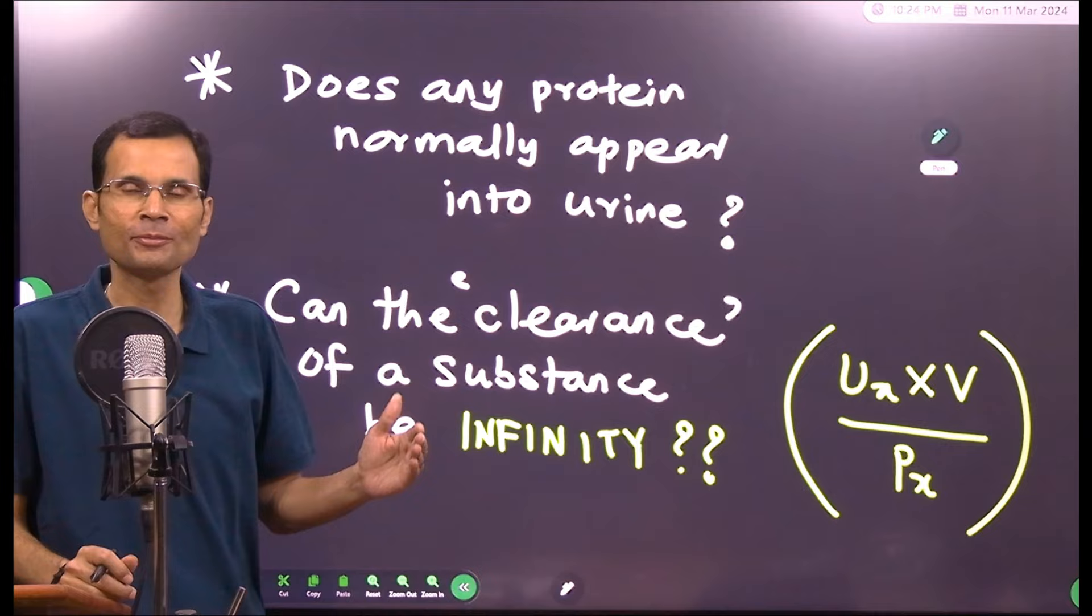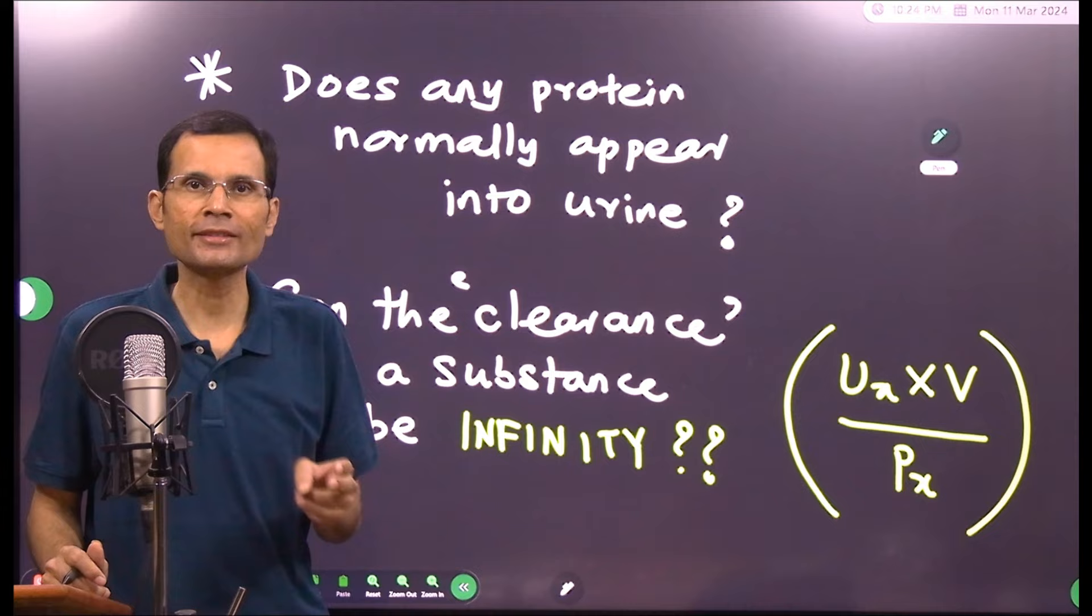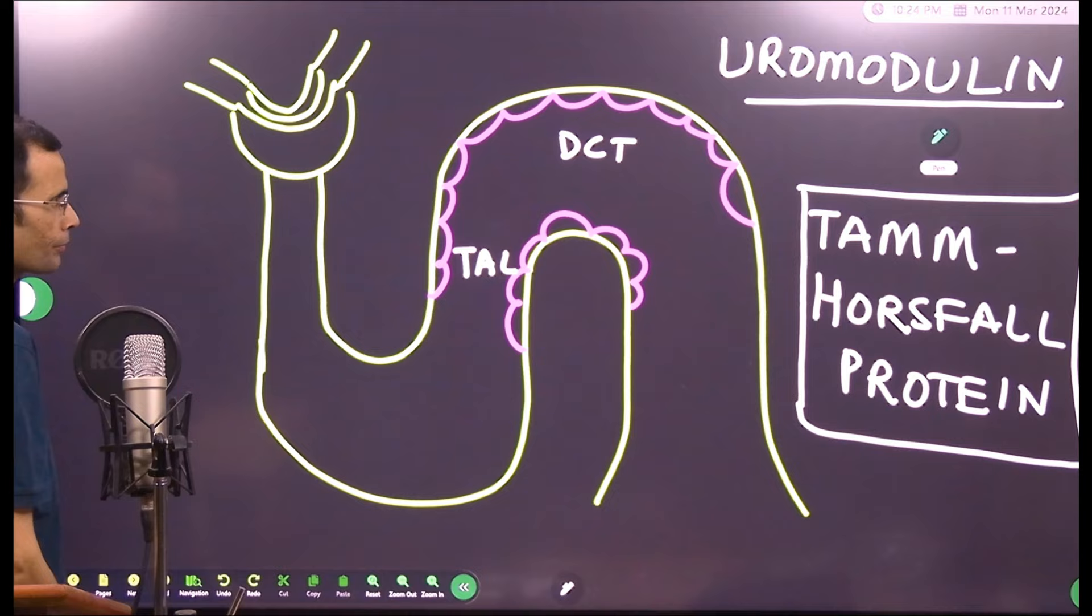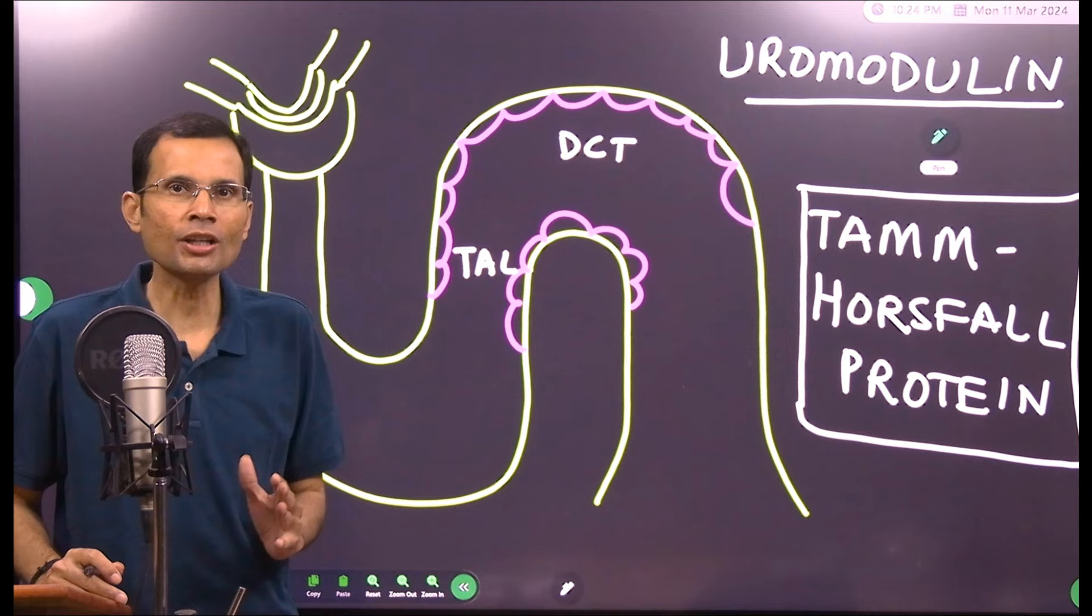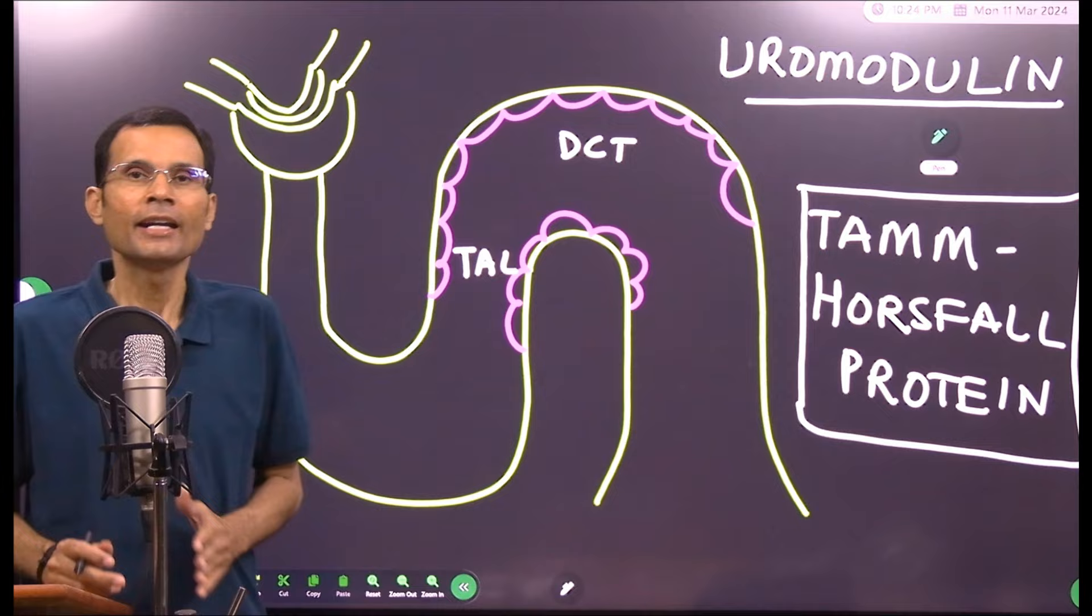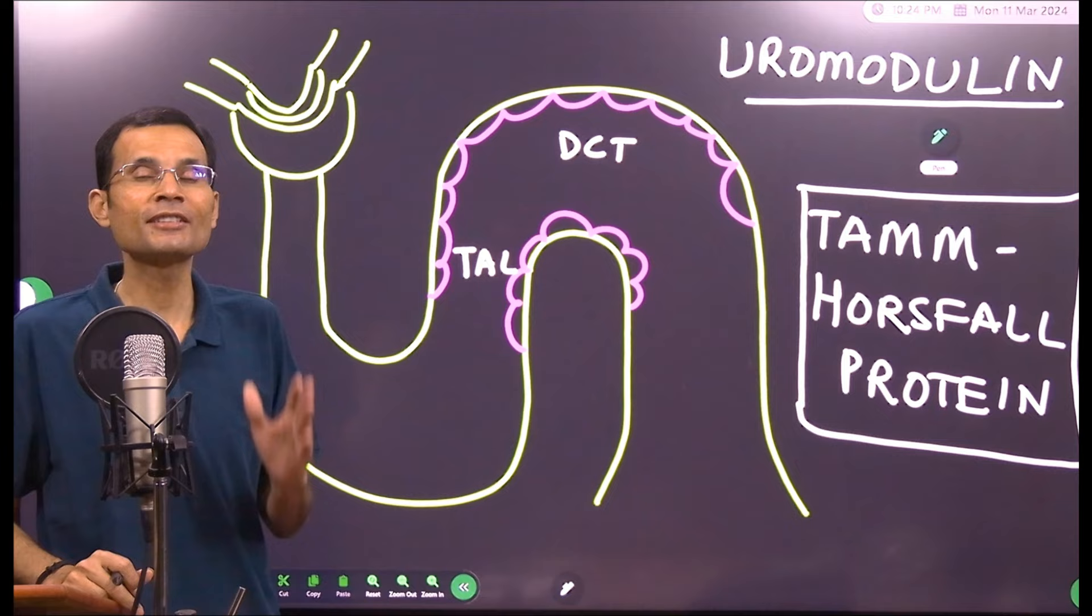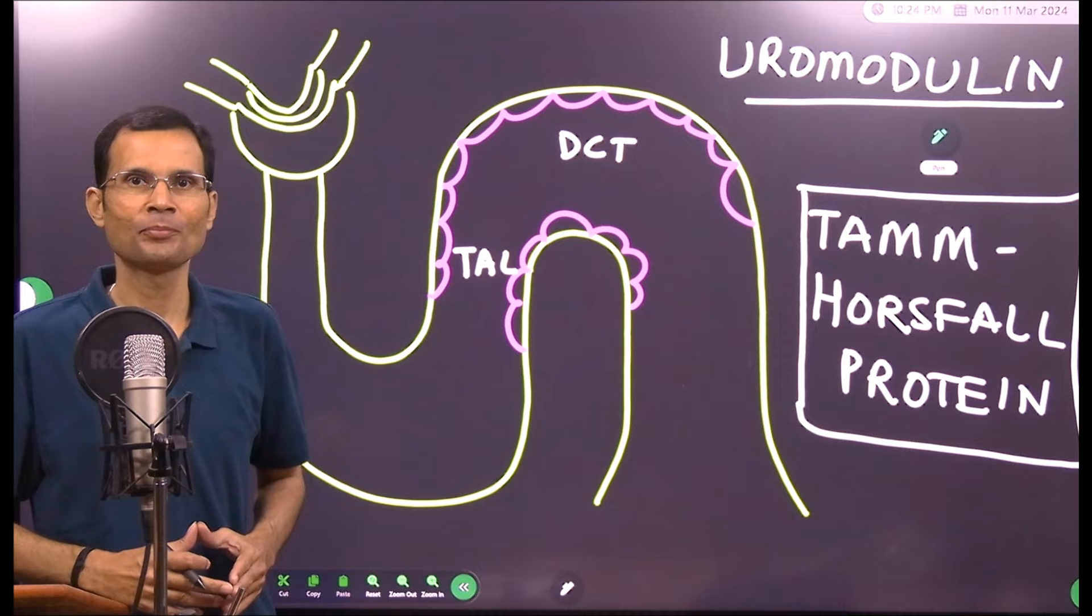So both these questions have the same answer and the name of the protein is Tamm-Horsfall protein. Now basically one must understand that this protein is a normal constituent of the urine. Yes, it's a glycoprotein and it normally appears into urine but it is not a constituent of the plasma. It's not present in the plasma and yet it is coming into urine. How is that possible?